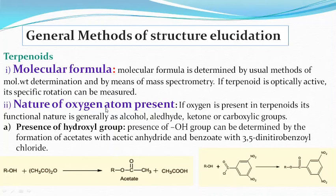The second point is the nature of the oxygen atom present. If the oxygenated products of terpenoids are taken, we find the functional nature of the oxygen atom, which can be alcohol, aldehyde, ketone, or carboxylic groups.